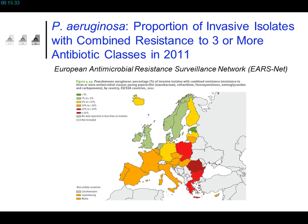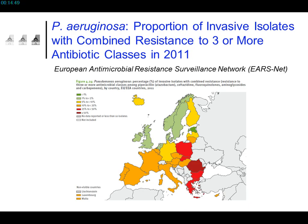The third reason why we should limit the duration of antibiotic courses in hospitals is the epidemiological situation we are in today. For instance, in our country, the share of Pseudomonas aeruginosa strains responsible for clinically significant infections that are resistant to at least three antibiotic classes is between 10% and 25% of cases.